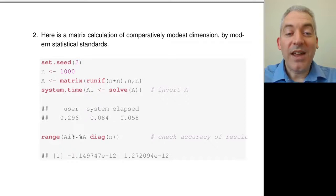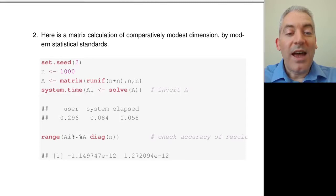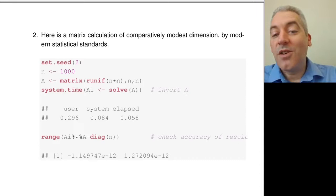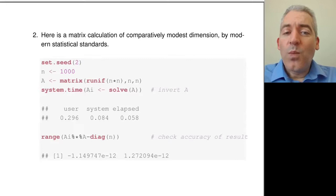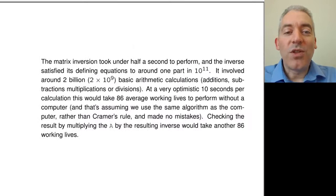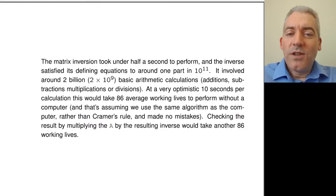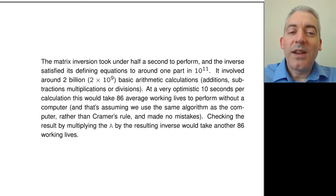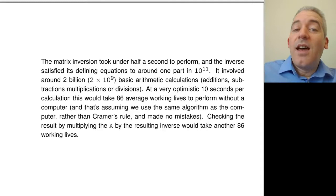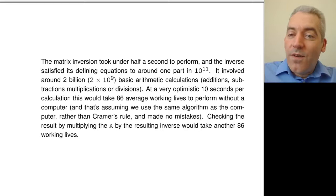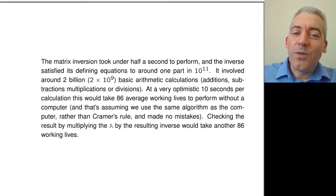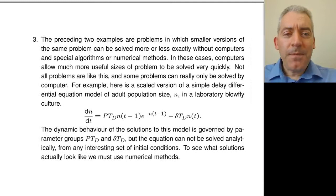You can invert a thousand by thousand matrix in the blink of an eye, and it's incredibly accurate. We can check how good our inverse is by multiplying it by the matrix we started with and comparing it to the identity, and we see that it's incredibly close. When you work it out, this actually has around 2 billion arithmetic instructions. Think how long it would take to do 2 billion arithmetic instructions by hand — even with a calculator, it's just inconceivable. Computers are very, very powerful and very, very fast, allowing us to tackle problems much, much bigger than we could tackle by hand.